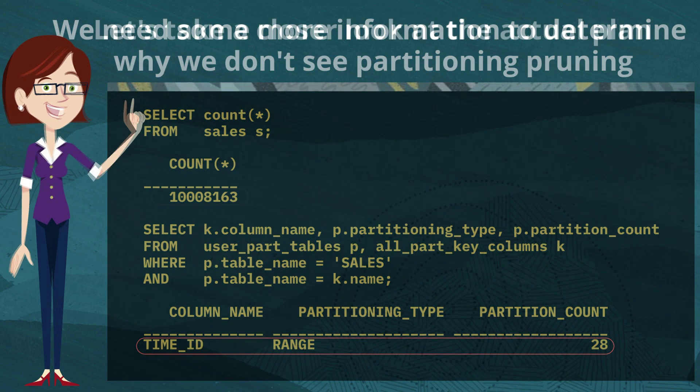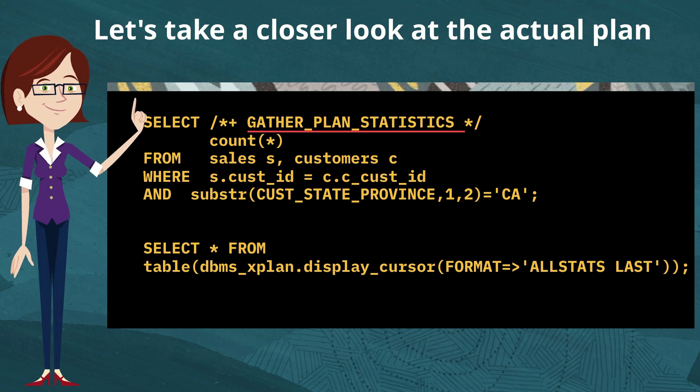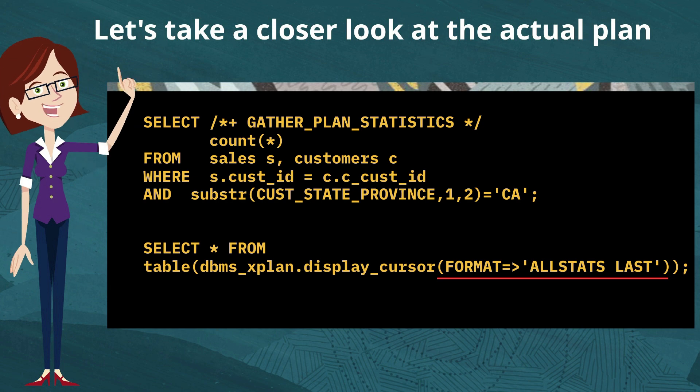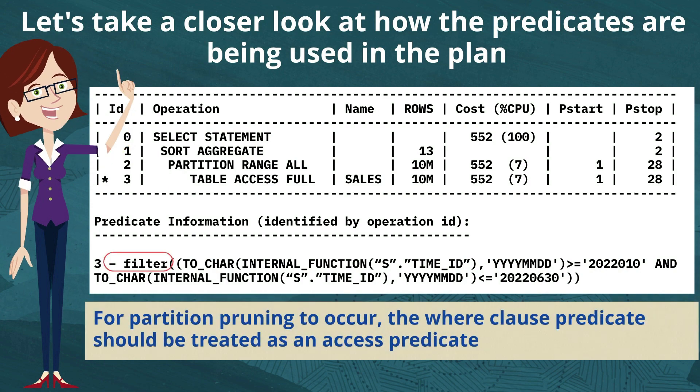Let's take a closer look at the plan. I want to add the gather plan stats hint to the query and use the format all stats last to get a more detailed execution plan. I'm more interested in the predicate information underneath that plan, because in order to get partition pruning, the where clause predicate needs to be used as an access predicate.